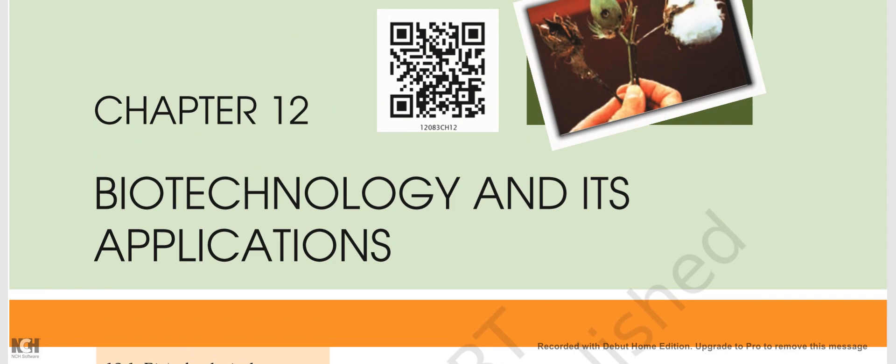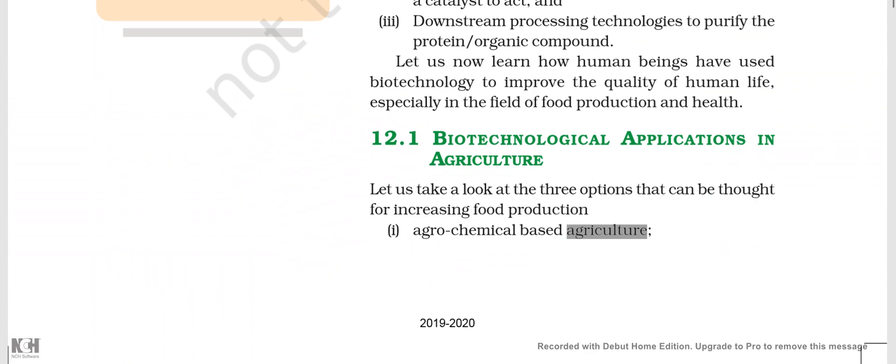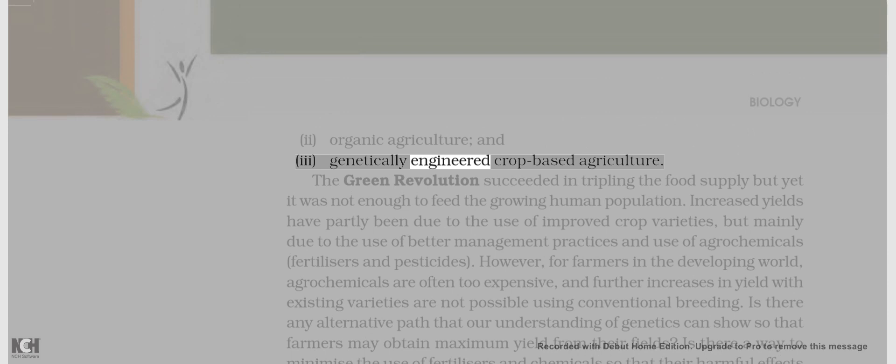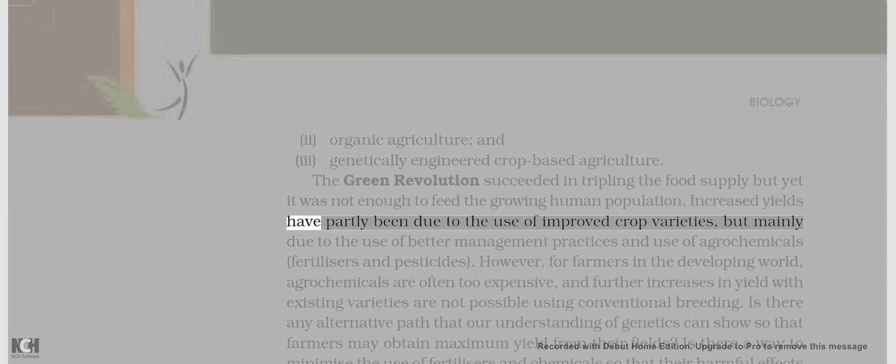12.1 Biotechnological Applications in Agriculture. Let us take a look at the three options for increasing food production: 1. Agrochemical-based agriculture, 2. Organic agriculture, and 3. Genetically engineered crop-based agriculture. The green revolution succeeded in tripling the food supply but was not enough to feed the growing human population. Increased yields have partly been due to the use of improved crop varieties, but mainly due to better management practices and use of agrochemicals, fertilizers and pesticides.